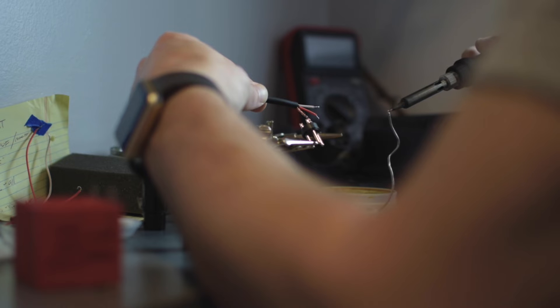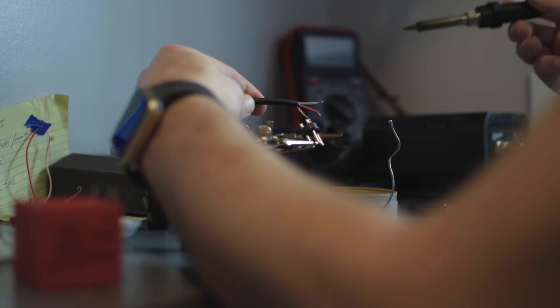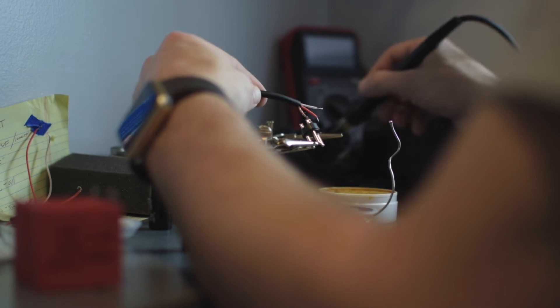But when the next person comes along and if they have a problem with the cable, they may assume one thing is another. But in general, the positive is the red, the negative is the white. Obviously, the bare copper wire is the ground.